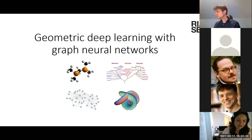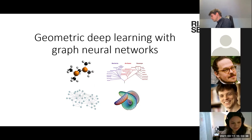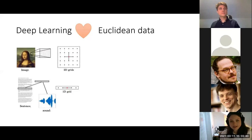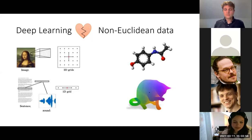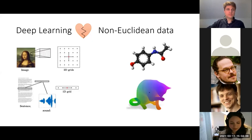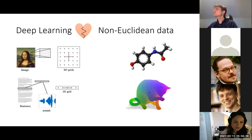If you have Euclidean data, traditional deep learning works really well — data on a flat surface or as a sequence, such as an image, text, or audio. But what if the data looks like a molecule with objects having relations to each other, or a surface where you want to model something? The data is no longer Euclidean, so convolutional networks don't work well. If you're able to represent your data on a graph, you can use a graph neural network instead.